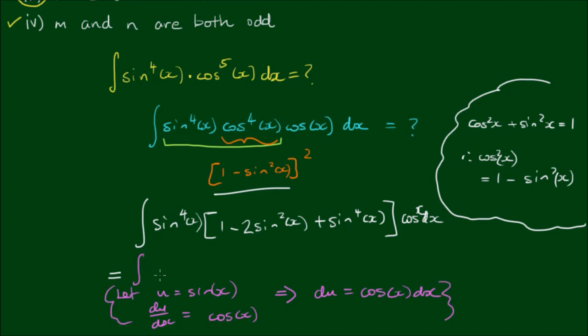So after we make this substitution, the integral becomes the integral of u to the 4th power outside of 1 minus 2u to the 2nd power plus u to the 4th power. And cosine x dx is equal to du.